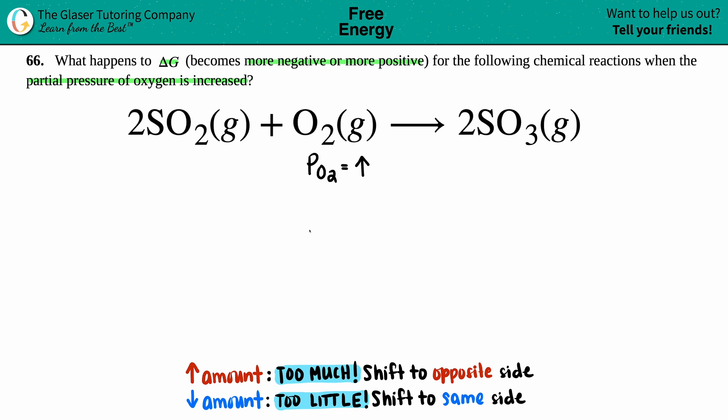If you increase your amount of something, in this case that's exactly what we did—the pressure of oxygen increased—you have too much of it, so you have to make a change. Whenever you have too much of it, your equilibrium will shift to the opposite side.